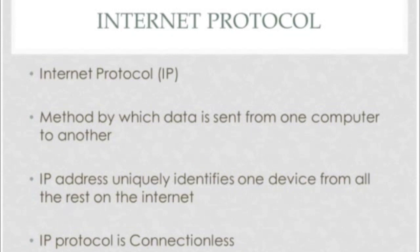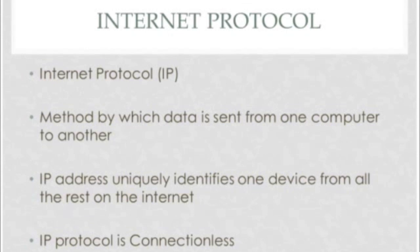Because the message is divided into a number of packets, each packet can, if necessary, be sent along a different route across the internet. Packets can arrive in different orders than they were originally sent. The Internet Protocol just delivers them. It is up to another protocol, the Transmission Control Protocol, or TCP, to put them back together in the right order. IP is a connectionless protocol, which means that there is no continuing connection between the endpoints that are communicating. Each packet that travels through the internet is treated as an independent unit of data without any relation to any other unit of data.